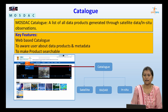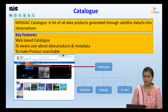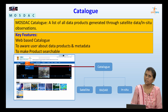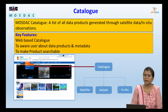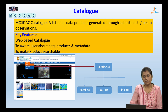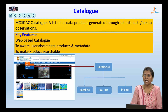Coming to the catalog: the MOSDAC catalog may be defined as a list of data products generated through satellite and in-situ observations. MOSDAC has more than 210 data products available. Key features of the catalog include that it is web-based and available on the portal, accessible from www.mosdac.gov.in. The purpose is to make users aware of available data products, describe metadata, and make products searchable. The catalog can be accessed from the top link on MOSDAC under three categories: satellite, radar, and in-situ.